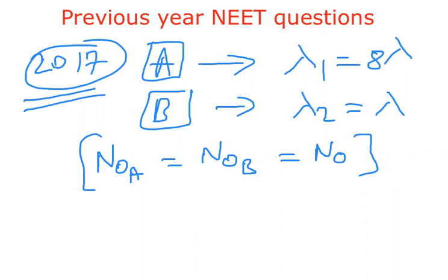Our target here is: after what time will the ratio of remaining nuclei of material A to material B be equal to 1/e? That means we need to find t such that Na/Nb = 1/e.